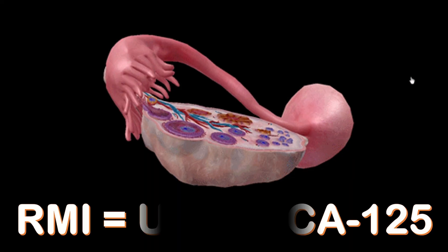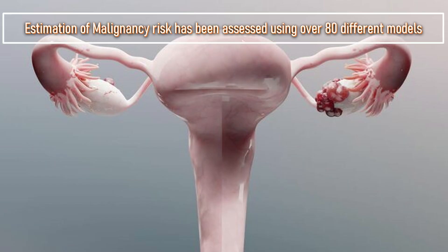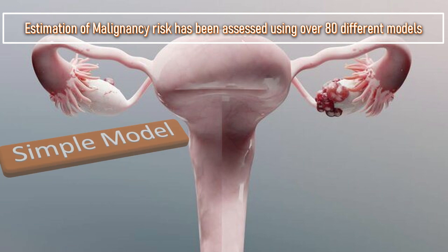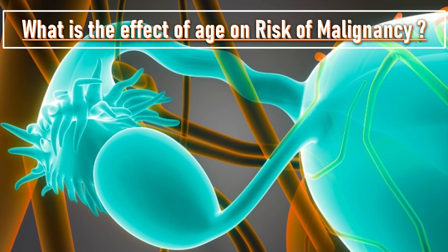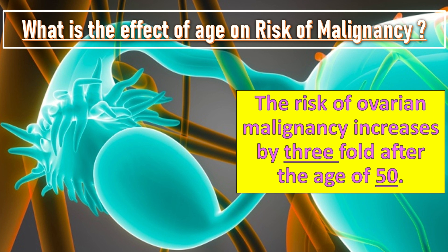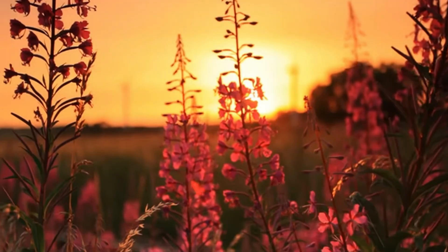An estimation of the risk of malignancy is essential in the assessment of an ovarian mass. Estimation of malignancy risk has been assessed using over 80 different models, including simple, intermediate, and advanced models. The risk of ovarian malignancy increases three-fold after the age of 50 years. Women with RMI less than 25 have a low risk of ovarian cancer of less than 3%; RMI 25 to 250 indicates moderate risk of 20%; and RMI greater than 250 indicates high risk of approximately 75%.